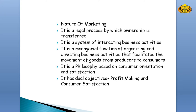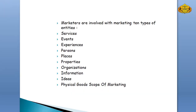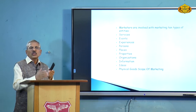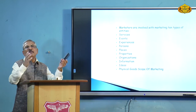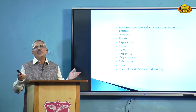Marketing is known as both an art and a science, because it involves both, and marketing is also a skill. Just recalling the pictures shown, the scope and different dimensions of marketing become clear. What is marketed? Marketing covers services, events, experiences, persons, places, properties, organizations, information, ideas and goods. This is the whole gamut of marketing.